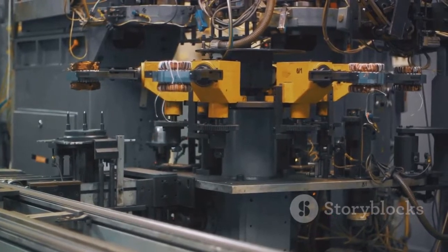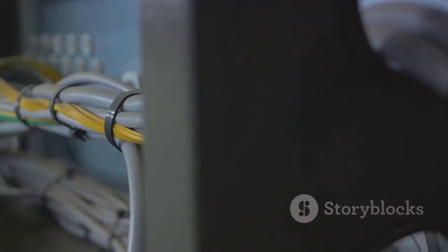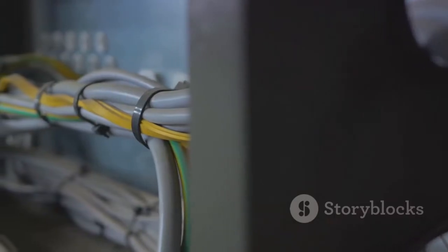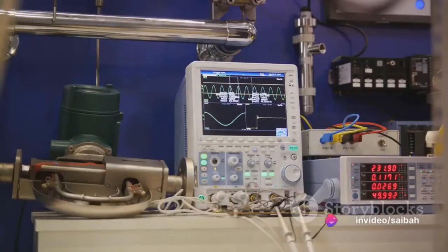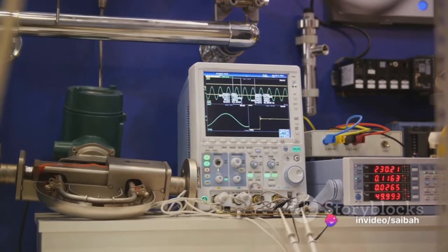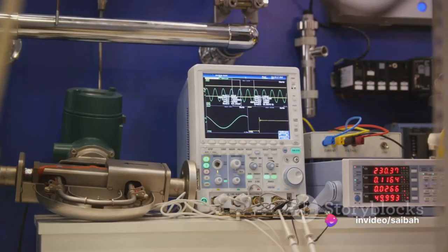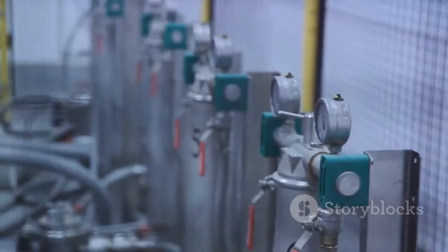Lastly, we explored the 4-wire transmitter, which is fully isolated and provides separate power supply and signal lines. This makes it ideal for applications where high accuracy and isolation are crucial. Remember, the choice of wiring depends on the specific requirements of your application.